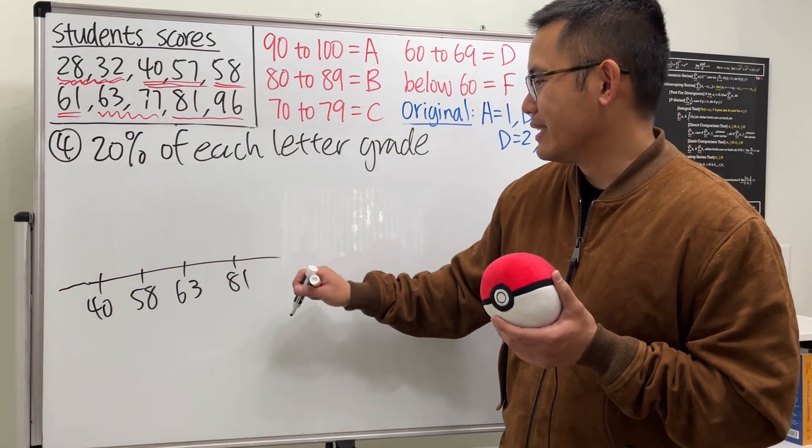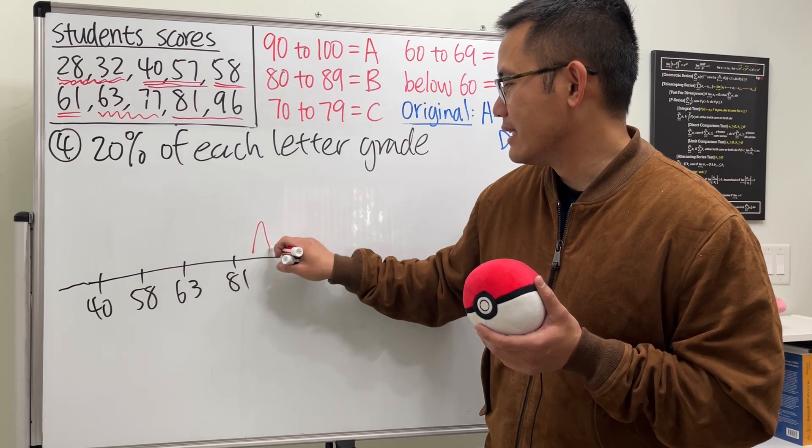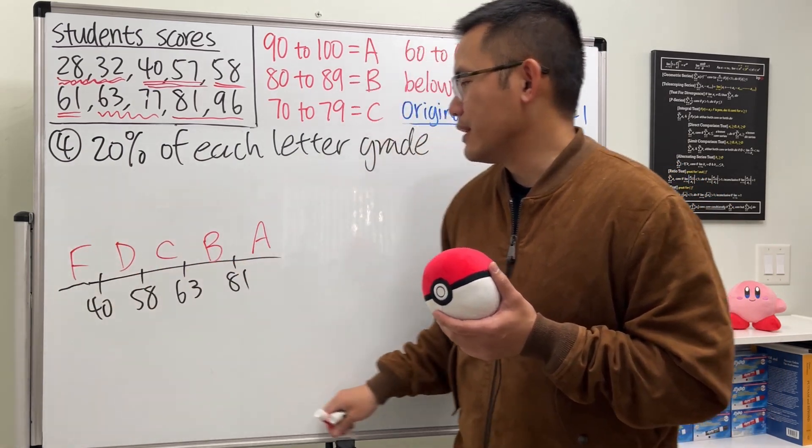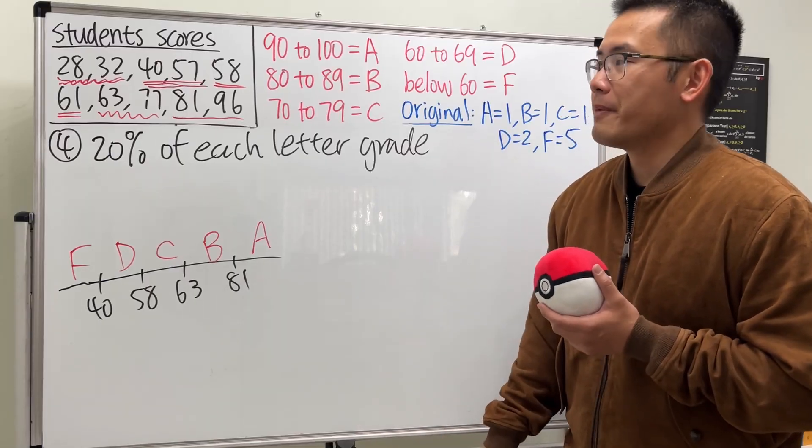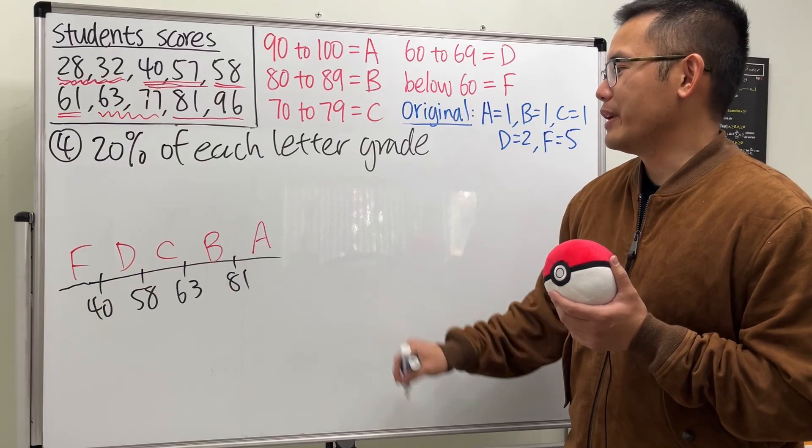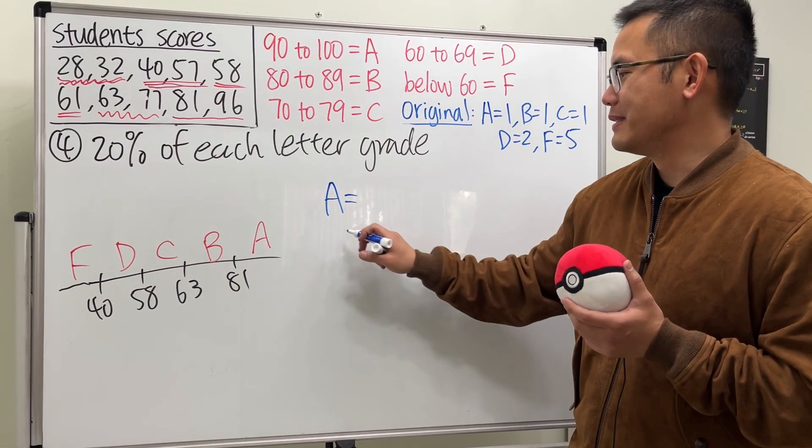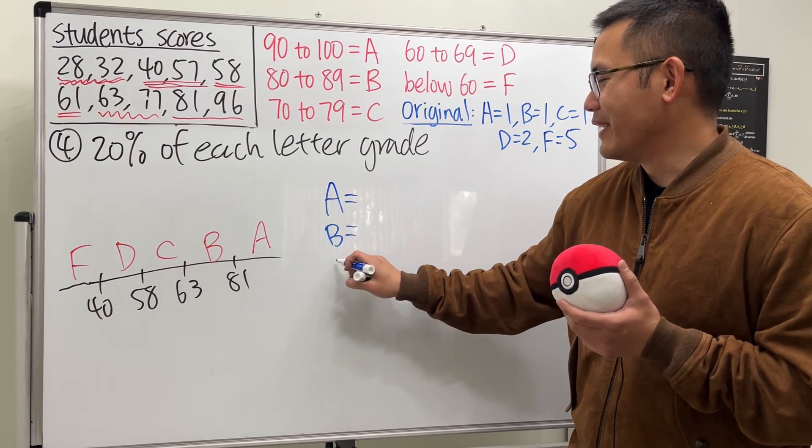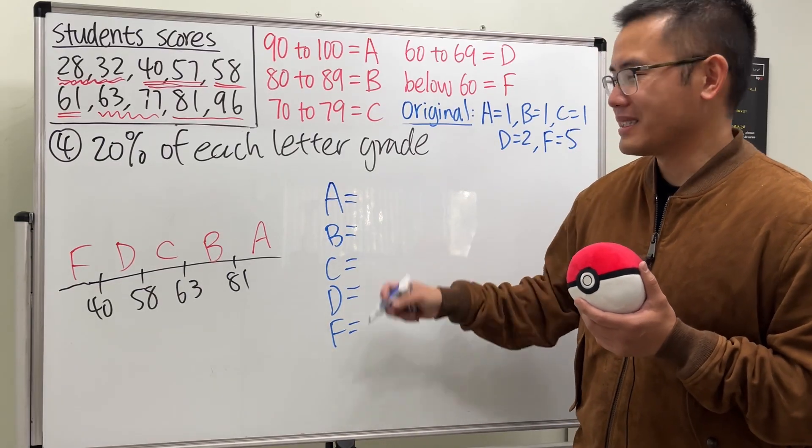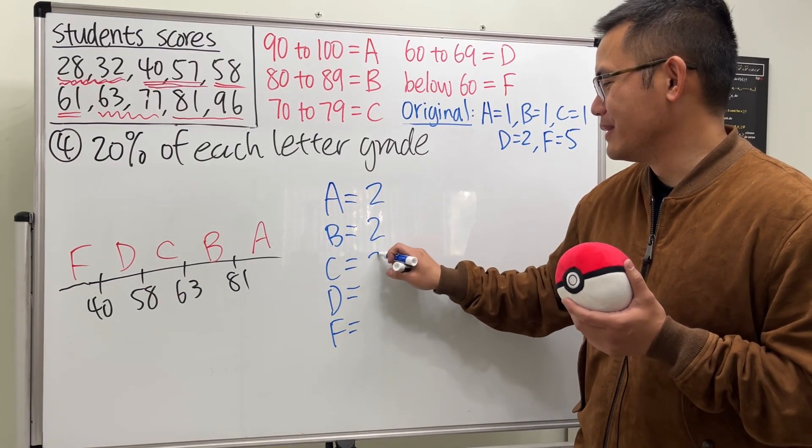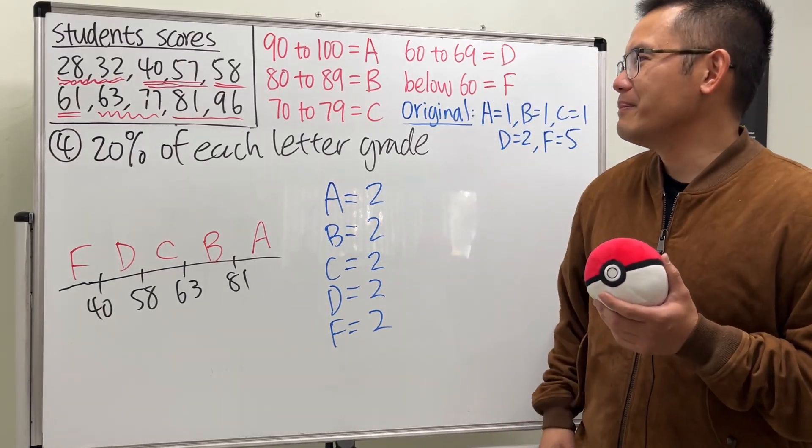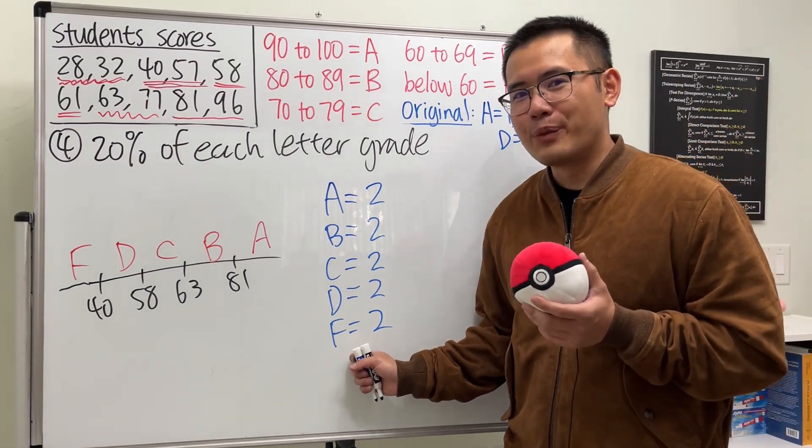So I think this is the most fair way. But in this case, the scale is going to look something like this. We are talking about 81 or above, 63 or above, 58 or above, 40 or above, and of course, below 40. So this right here will be the As, and then Bs, C, Ds, and Fs. So this right here, if you do implement this curve, you can always have the same number for all this right here. So A, B, C, D, and F. Guess what? This is just going to be 2, 2, 2, 2, 2. So I think this right here could have been the most fair way, in my opinion.